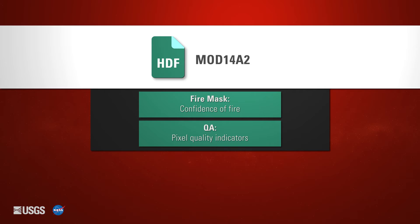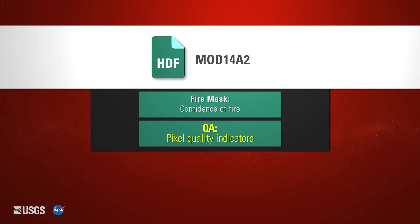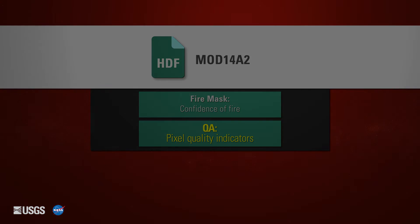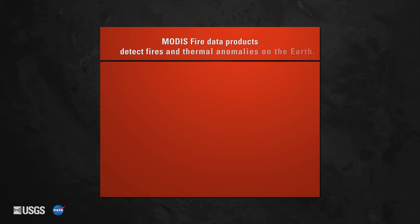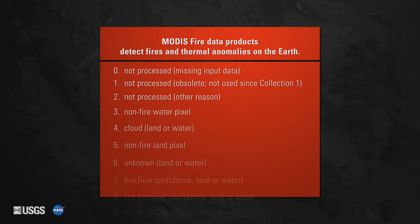Here's a visual representation of the data stored within a single Terra MODIS version 6 8-day thermal anomalies and fire 1 kilometer level 3 gridded product MOD14A2 HDF file. The HDF file for this product contains the fire mask, which measures the confidence that a fire occurred over a given pixel, and quality information.